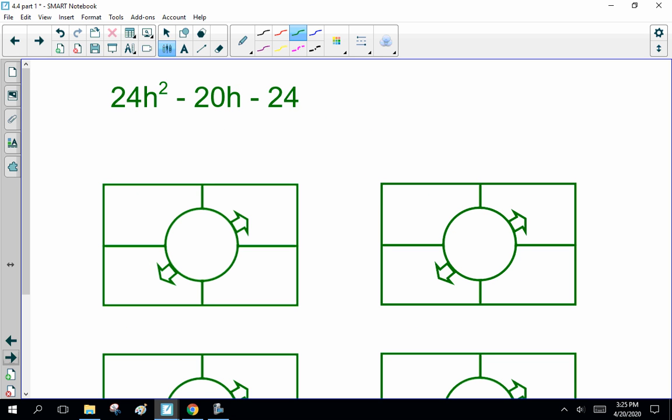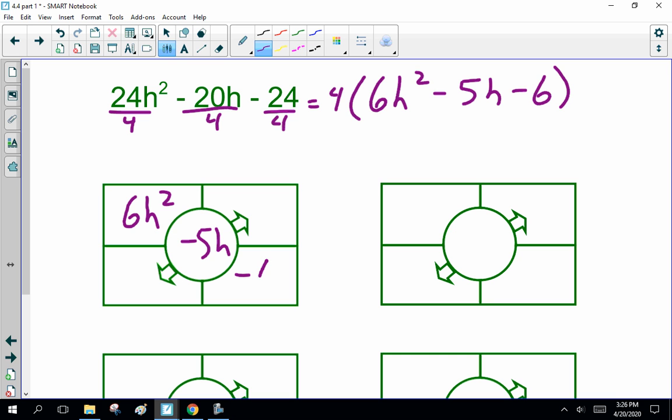Now, 24h squared minus 20h minus 24. 24, we can divide everything by 2. Oh, we can divide everything by 4, can't we? So, that's 6h squared minus 20 divided by 5h minus 6. Oh, dear, oh, dear, oh, dear. 6h squared minus 5h minus 6.